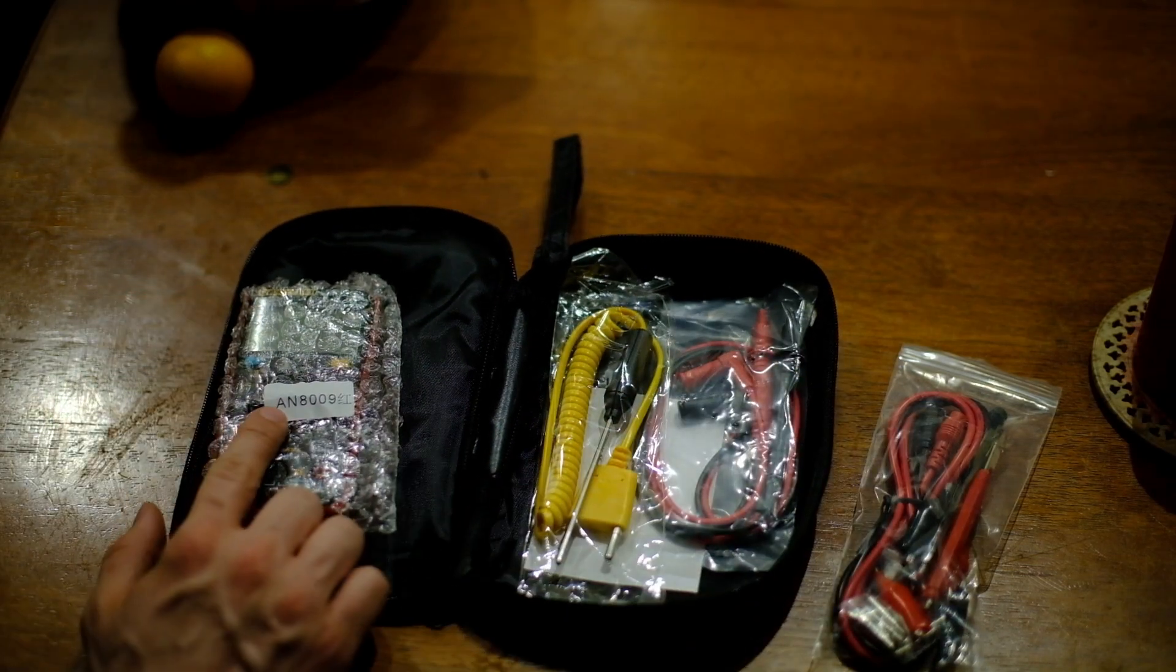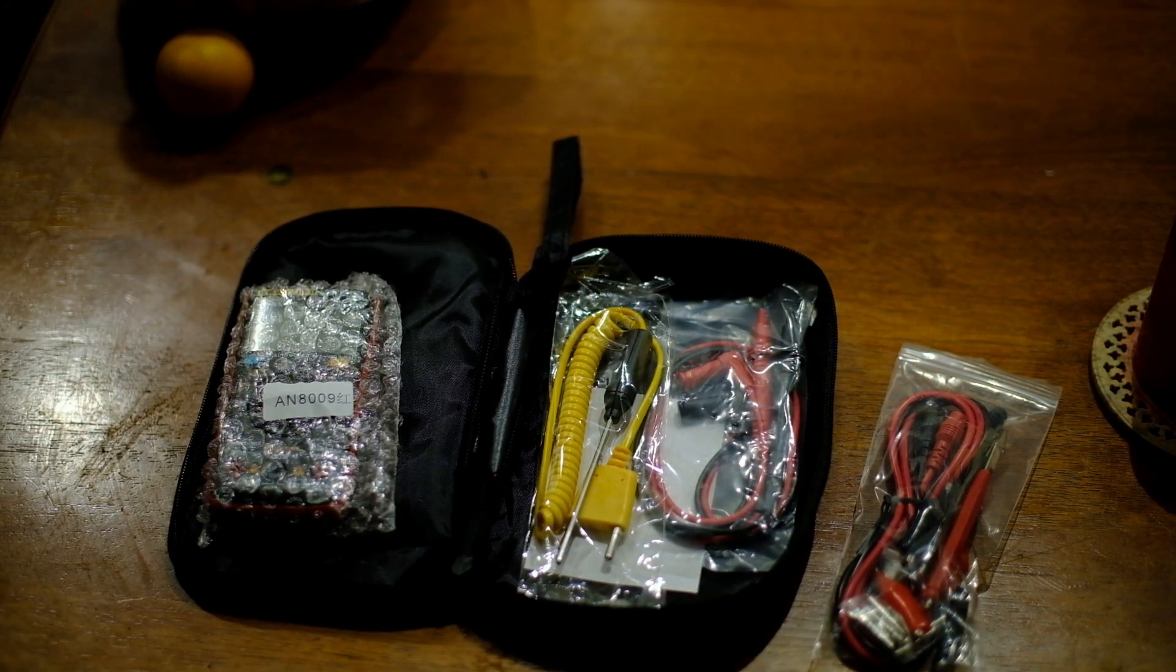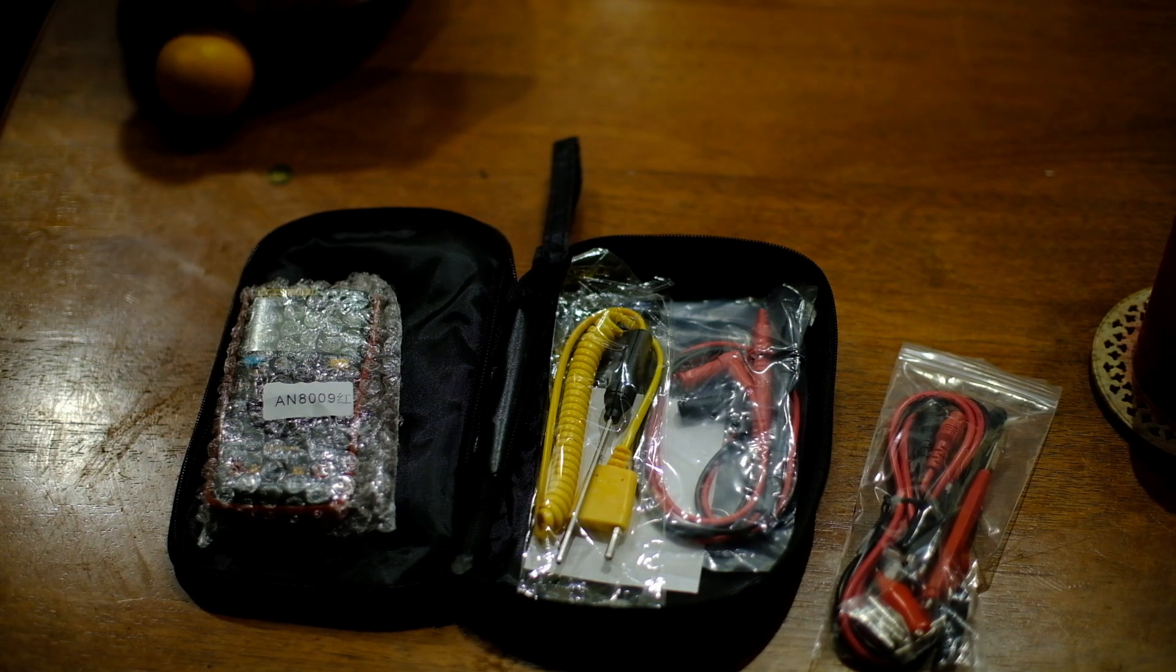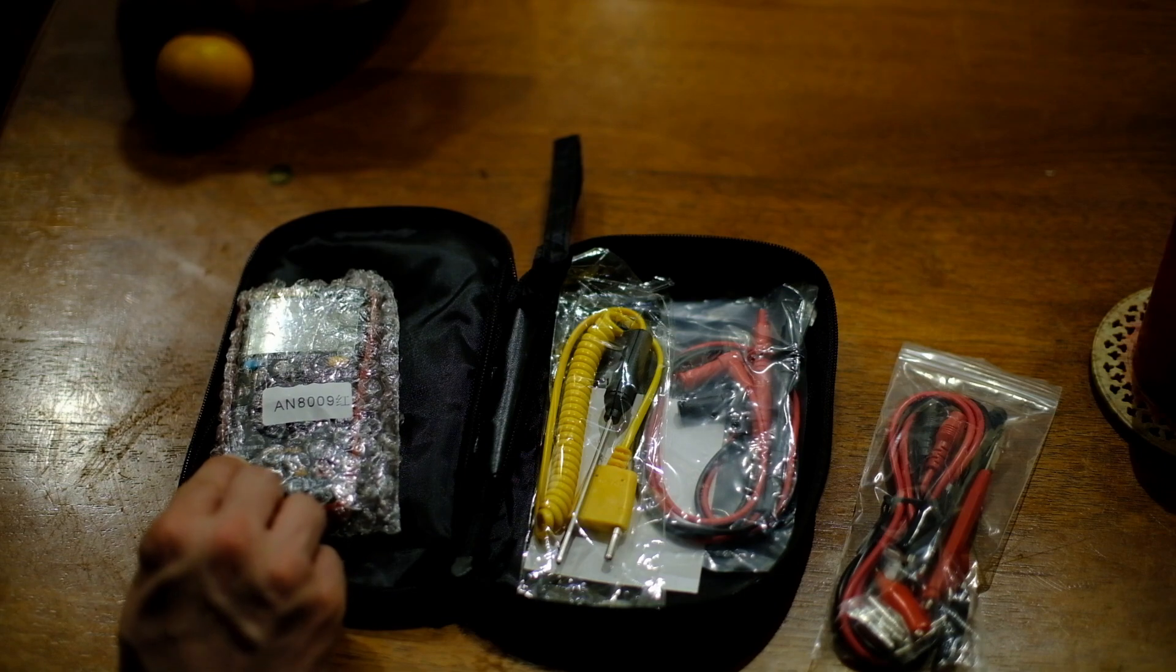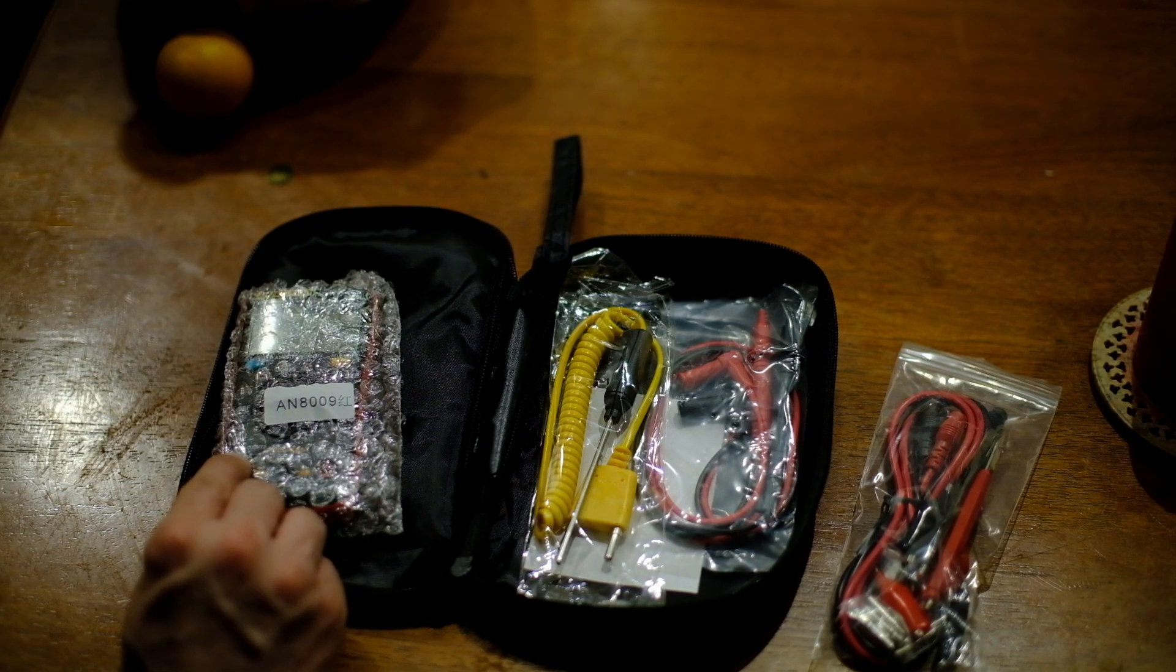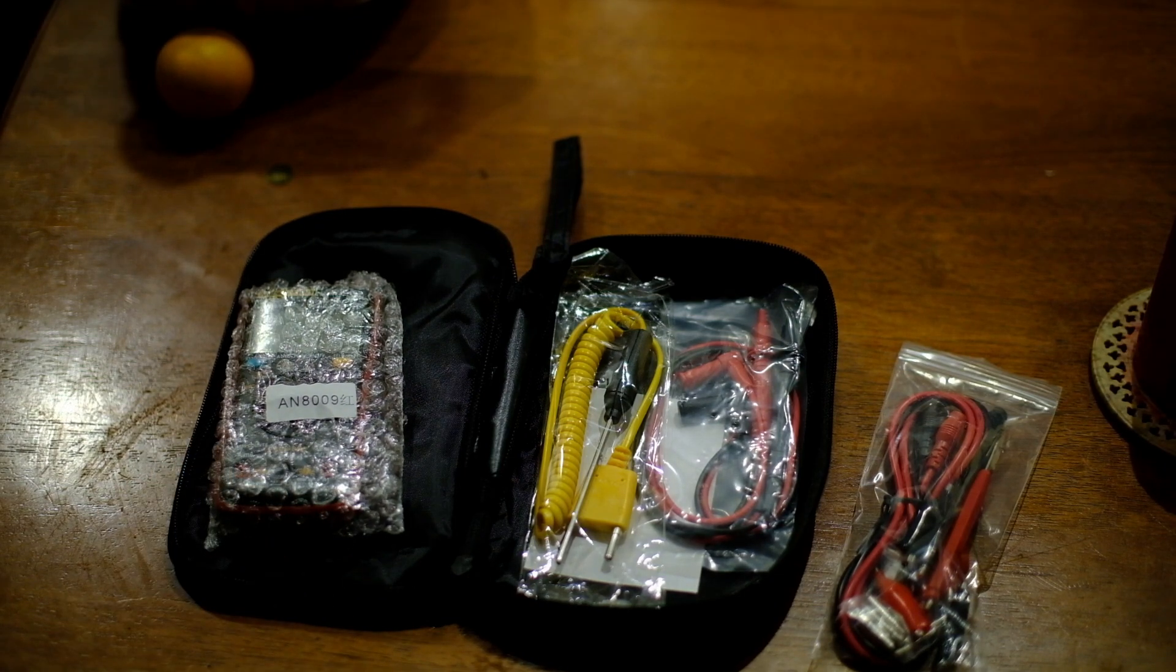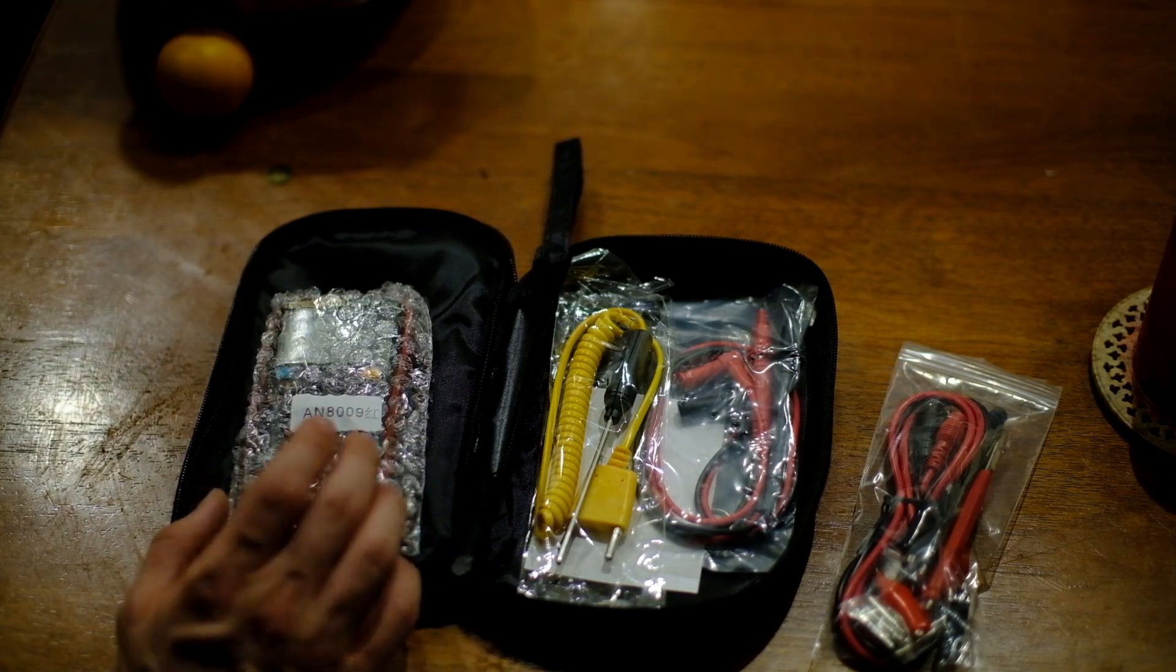So this is the Anang AN8009, which is a true RMS meter, yeah it says that there, 9999 counts, so pretty decent meter for the price, I think it's like $30.